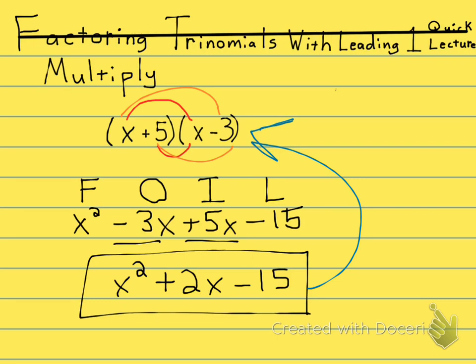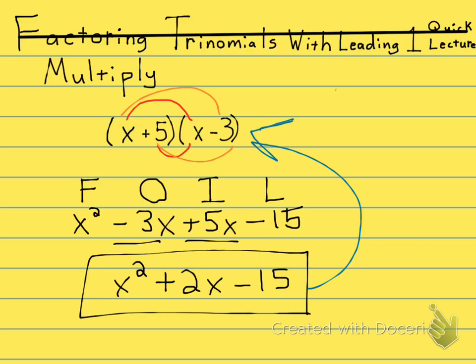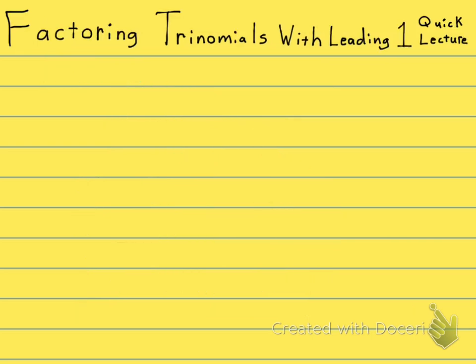The way I'm going to show you is kind of the opposite of what we did here — it's the opposite of FOIL. You're going to have to find out what numbers would go in the first two positions and what numbers would go in the last two positions. Then you have to make sure that the outer plus the inner match up. So let's go ahead and see how we actually factor the trinomial: X squared plus 2X minus 15.